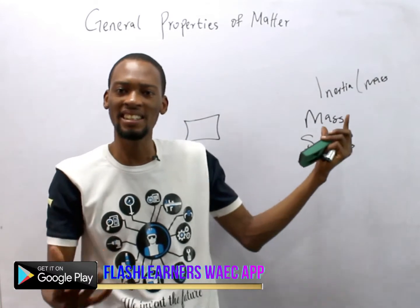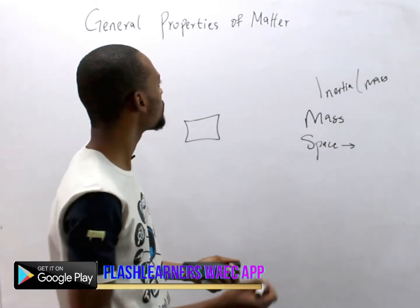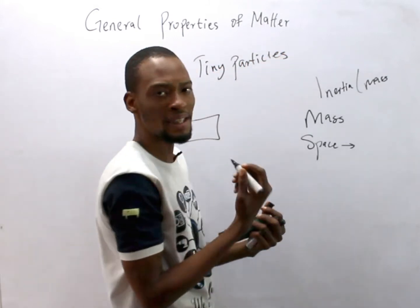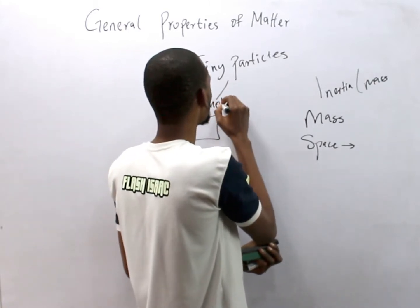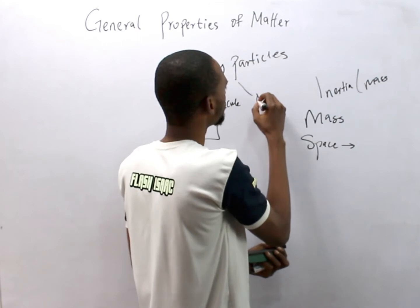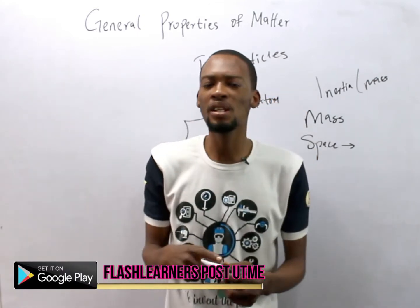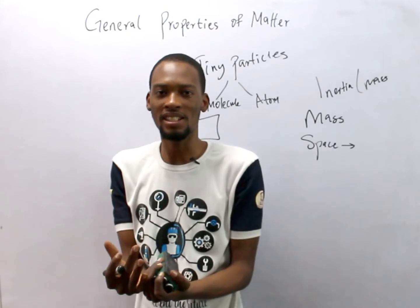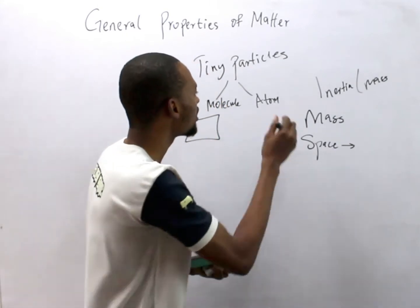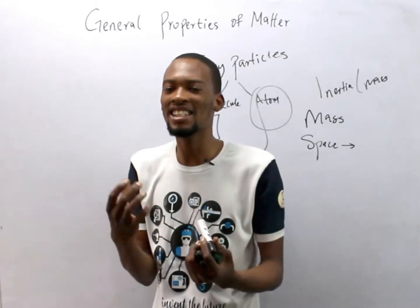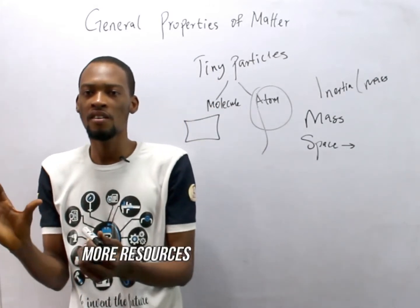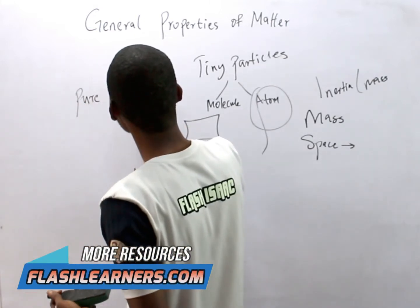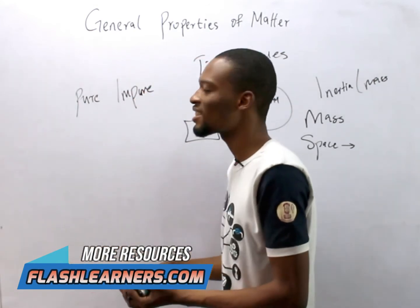Another property of matter is that matter is made up of tiny particles, and these particles could be molecules or atoms. A molecule is simply the smallest particle of an element that can take part in a chemical reaction.